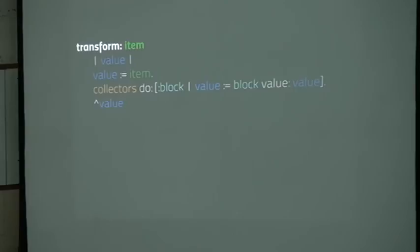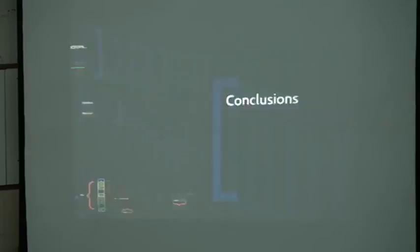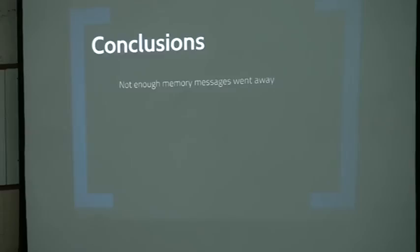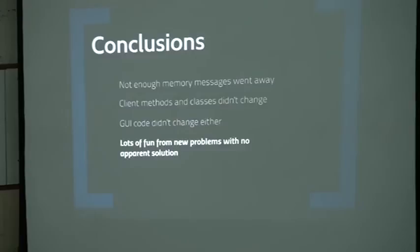Running out of time, but I've presented everything. Just conclusions: the out-of-memory error messages are gone. All the clients that interact with these objects don't have to change - they are totally agnostic of these few classes we created. The GUI code also didn't have to change and now works much faster. And in the process, we had a lot of fun solving problems that had no apparent solution. There are more things to do. That's all. Thank you.